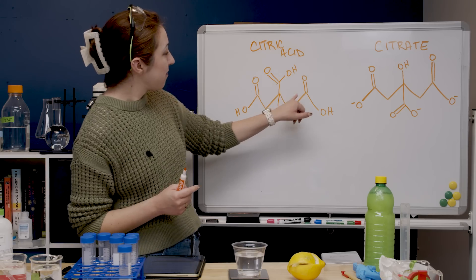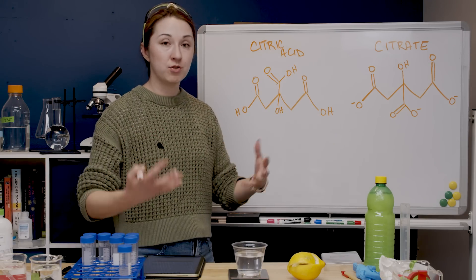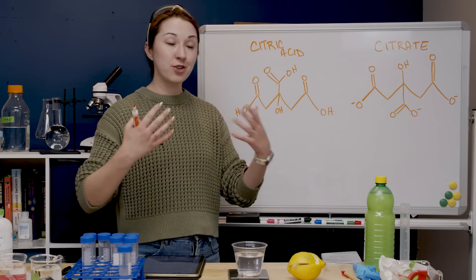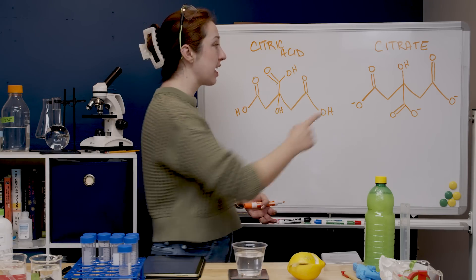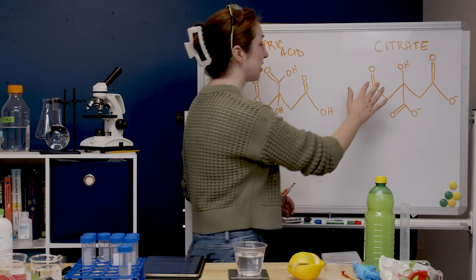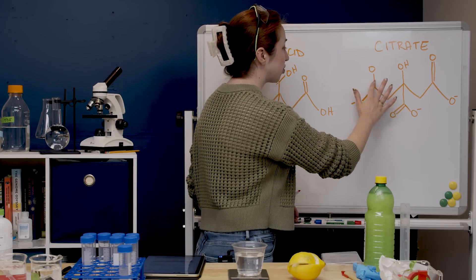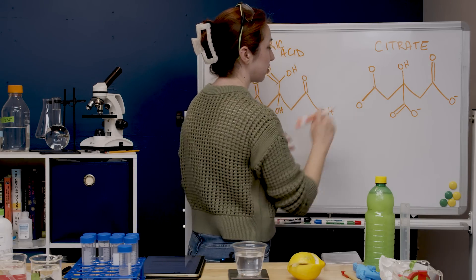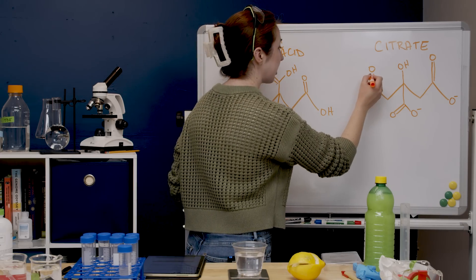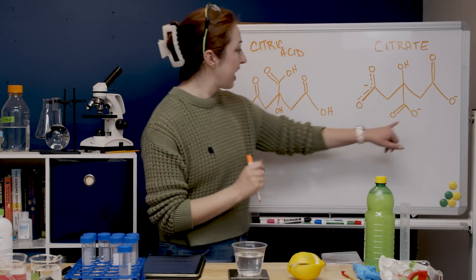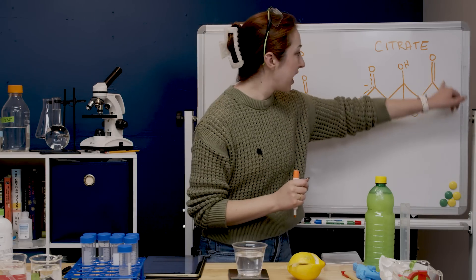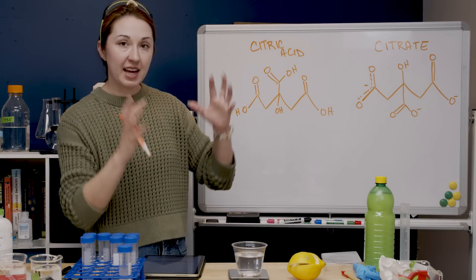So again you could also draw this carboxyl group that's lost a hydrogen here with this resonance structure. So actually these two would be sharing this negative charge and same thing with this carboxyl group here and that one there. So they're sharing that electron. I feel like if you're actually a chemistry professor you must have to spend so much time like perfecting your handwriting.